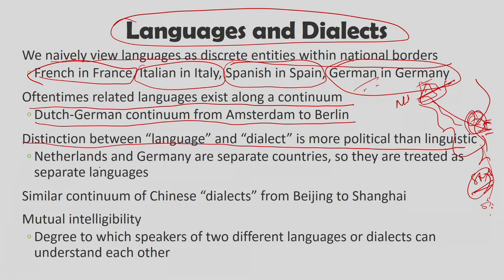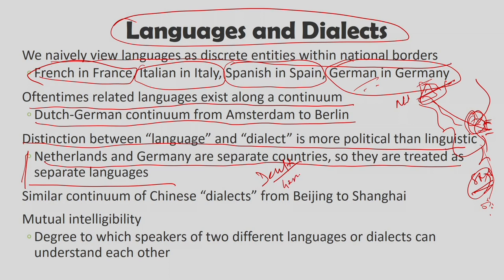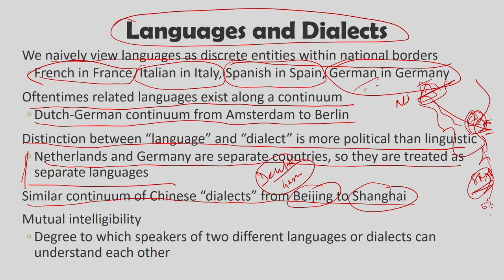The distinction between language and dialect is more political than linguistic. Netherlands and Germany are separate countries, so they are treated as separate languages, although Dutch and German come from the same family. Similarly there is a continuum of Chinese dialects from Beijing to Shanghai. To avoid the language-dialect conundrum, linguists assess mutual intelligibility — the degree to which speakers of two different languages or dialects can understand each other. For example, American and British English are mutually intelligible even with obvious differences.